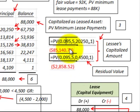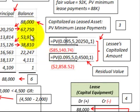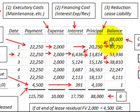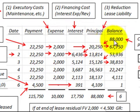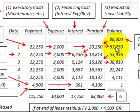To determine the capitalized amount for this lease, we take the present value of the minimum lease payments — $20,250 per year discounted at 9.5% for five years — which equals $85,140. We add the present value of the guaranteed residual value of $2,858. Summing these gives us the capitalized amount for the lease of $88,000.